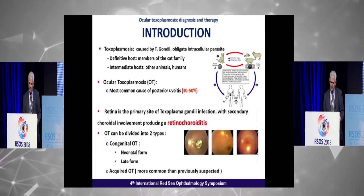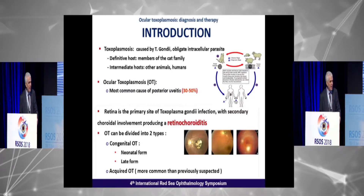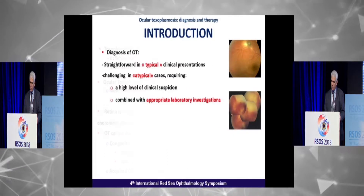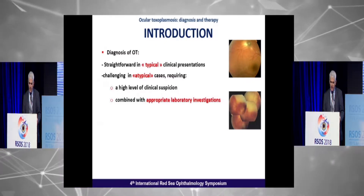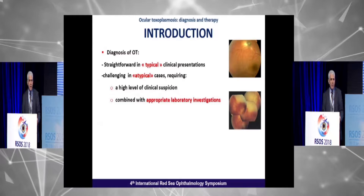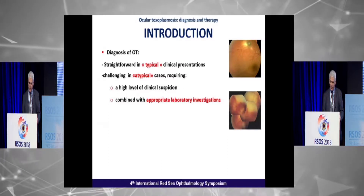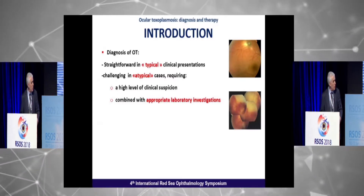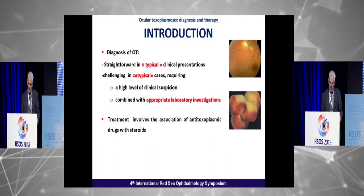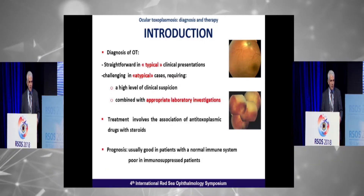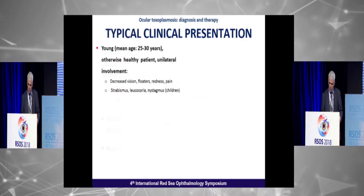Ocular Toxoplasmosis can be divided into two types: congenital ocular Toxoplasmosis and acquired Toxoplasmosis, which is more common than previously suspected. The diagnosis is very easy in typical clinical presentation; however, it may be challenging in atypical cases requiring a high level of clinical suspicion combined with appropriate laboratory investigation. Treatment involves antitoxoplasmic drugs with corticosteroids. Prognosis is usually good in immune-competent patients, but may be poor in immune-compromised patients.